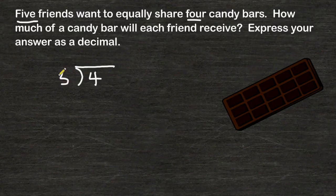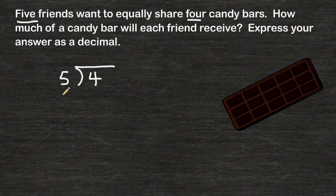Now at this point, we can see that five cannot be divided into four even one whole time. This simply means that each person will receive less than one whole candy bar.